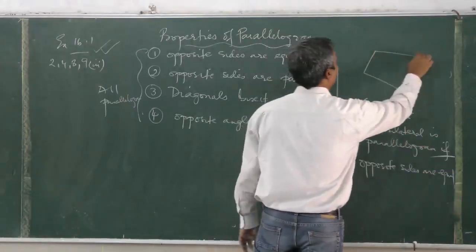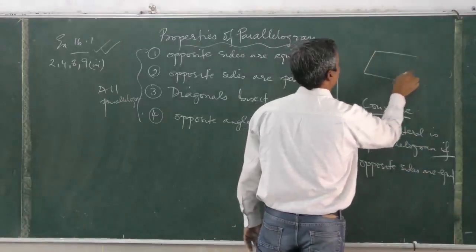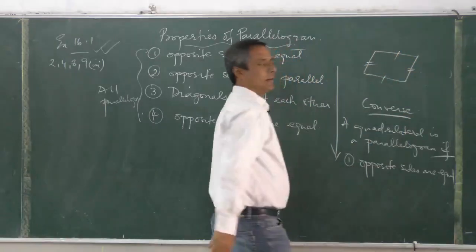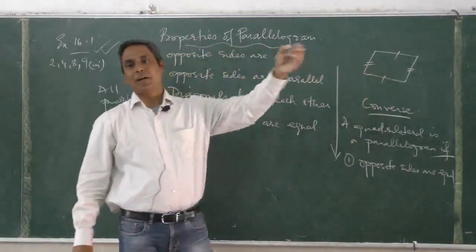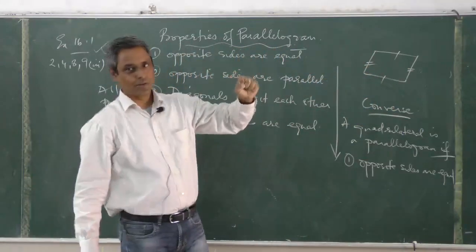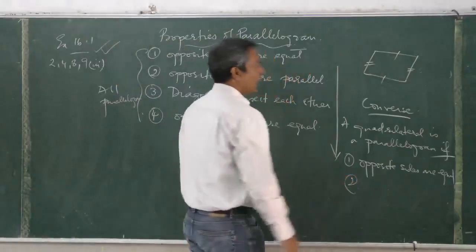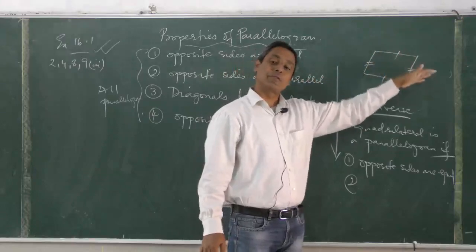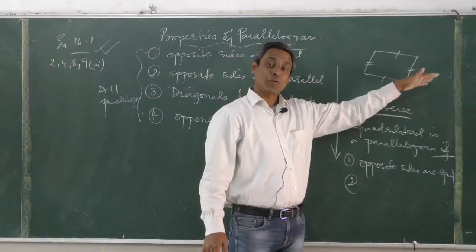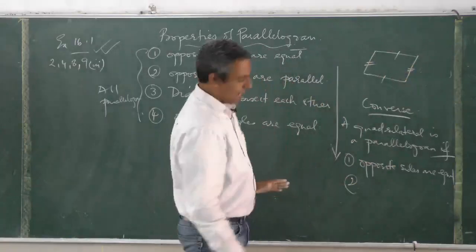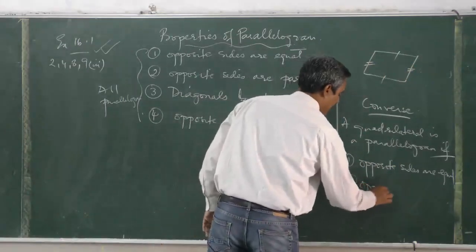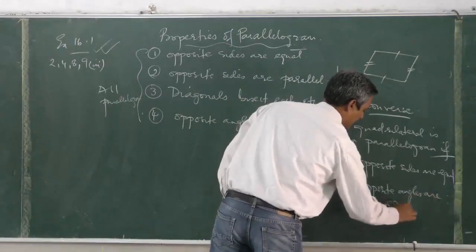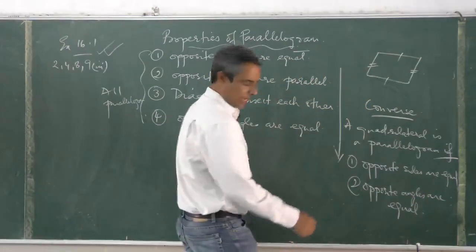That means if I have a quadrilateral and I say opposite sides are equal, then I can show that it is a parallelogram. So that's the first one. Initially, the only thing I know is it's a quadrilateral with opposite sides equal. So then I can conclude from that that it is a parallelogram. Second: opposite angles are equal. And the third one: diagonals are equal.